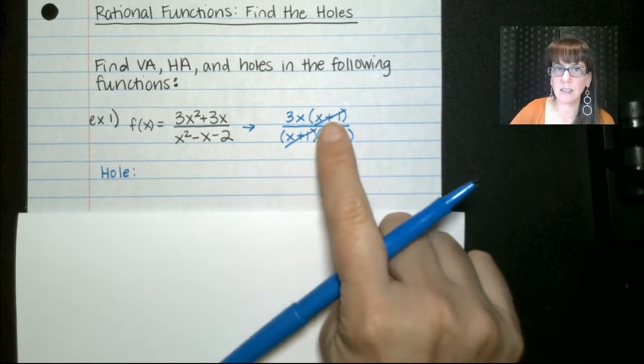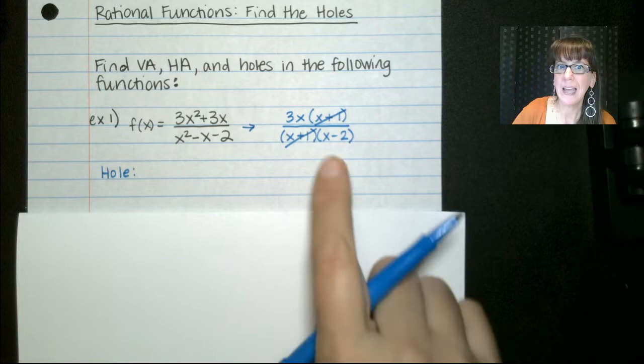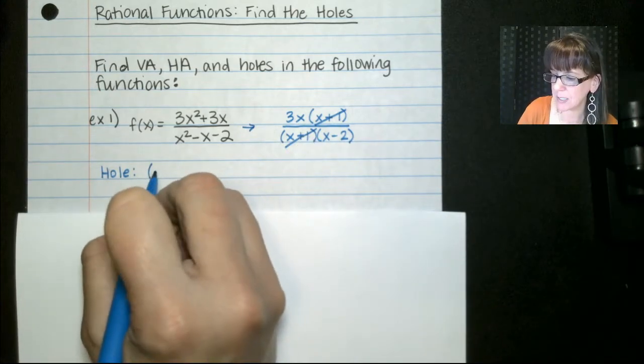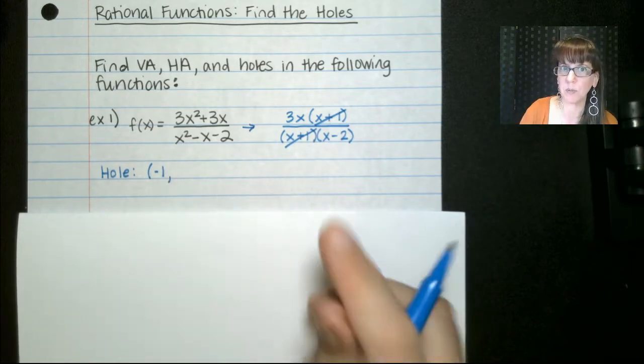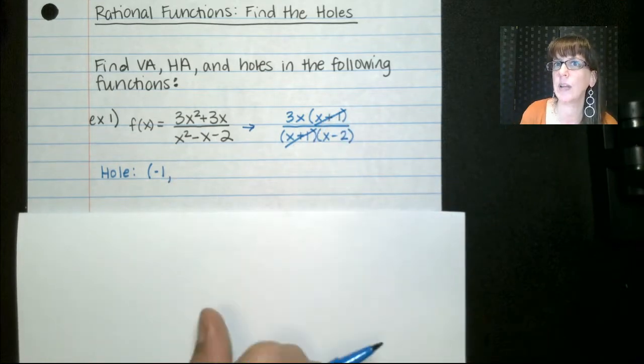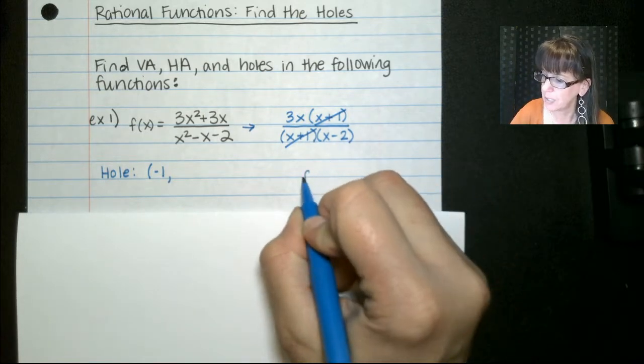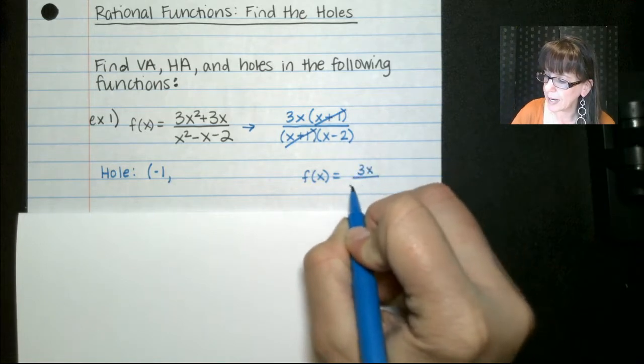If you end up canceling something out, you want to ask yourself, what would make that 0? And in this case, x+1, well, negative 1 would make that 0. So that's going to be our x. So we start by writing that. Now the next part we do is, once we've canceled these out, we have to write a new function. And this is the function we'll be graphing. So f(x) = 3x/(x-2).